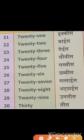TWENTY 20, ONE 1 — 21. TWENTY 20, TWO 2 — 22. TWENTY 20, THREE 3 — 23. TWENTY 20, FOUR 4 — 24. TWENTY 20, FIVE 5 — 25.